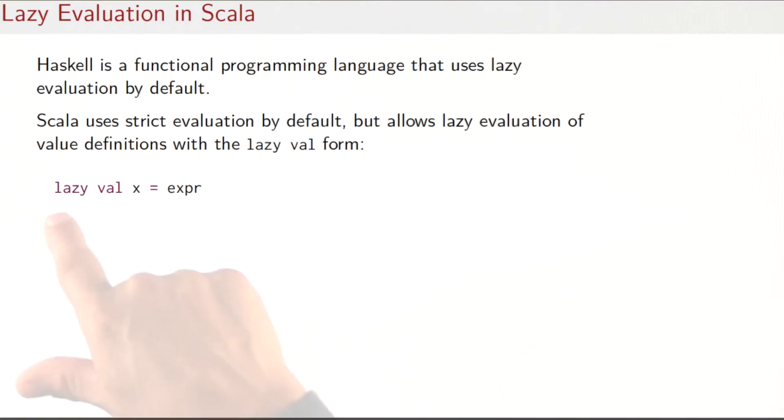So if you wrote lazy val x equals expression, you would get a lazy evaluation of the value x. What that means is that, just like in a call-by-name evaluation that you would get with def x equals expression, the expression here would not be evaluated immediately at the point of definition—it would be delayed until somebody wants the value of x for the first time. But afterwards, the behavior between def x and lazy val x diverge. For def x, every time you call x the expression is re-evaluated, whereas for lazy val the expression is reused every time except for the first one.